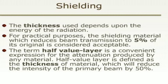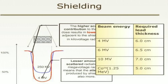Half value layer is defined as the thickness of material which will reduce the intensity of the primary beam by 50%. For 4 MV beam energy, required lead thickness is 6 cm. For 6 MV beam energy, required lead thickness is 6.5 cm. For 10 MV beam energy, required lead thickness is 7 cm, and for Cobalt-60 having average energy 1.25 MeV, the required lead thickness is 5 cm.